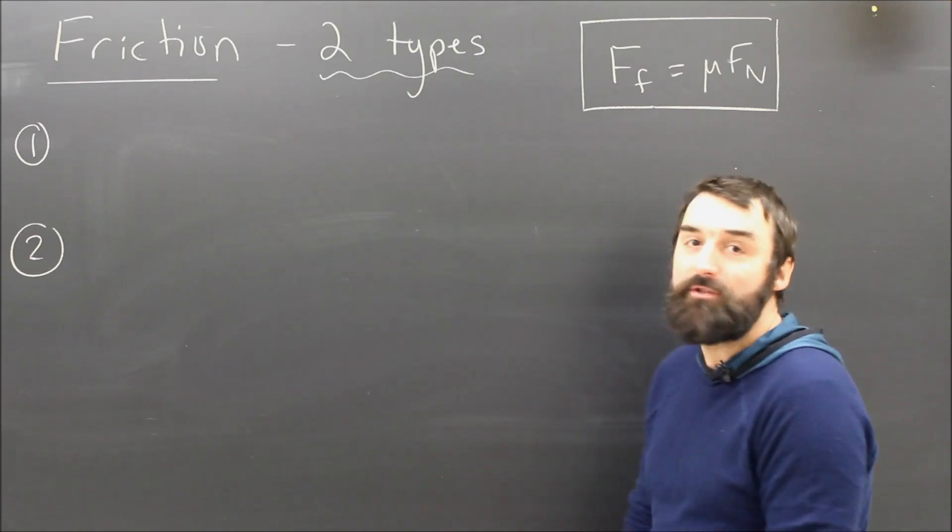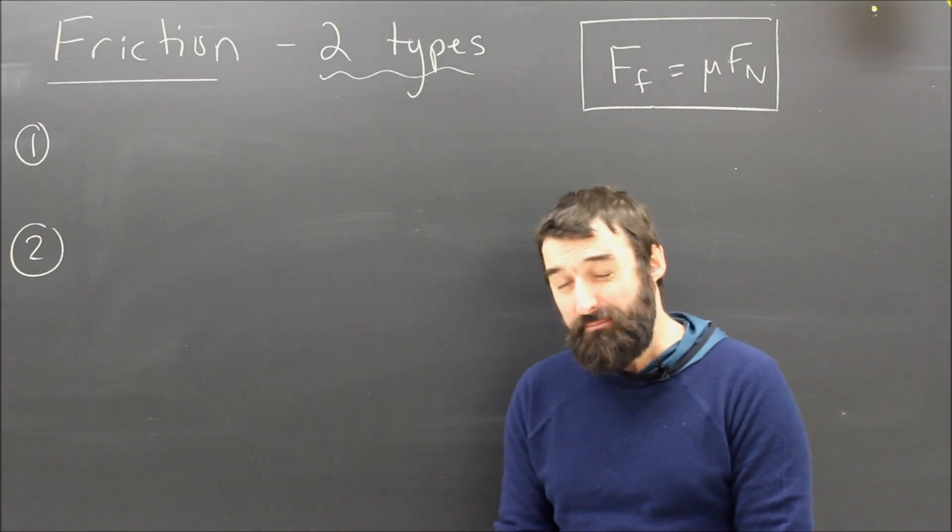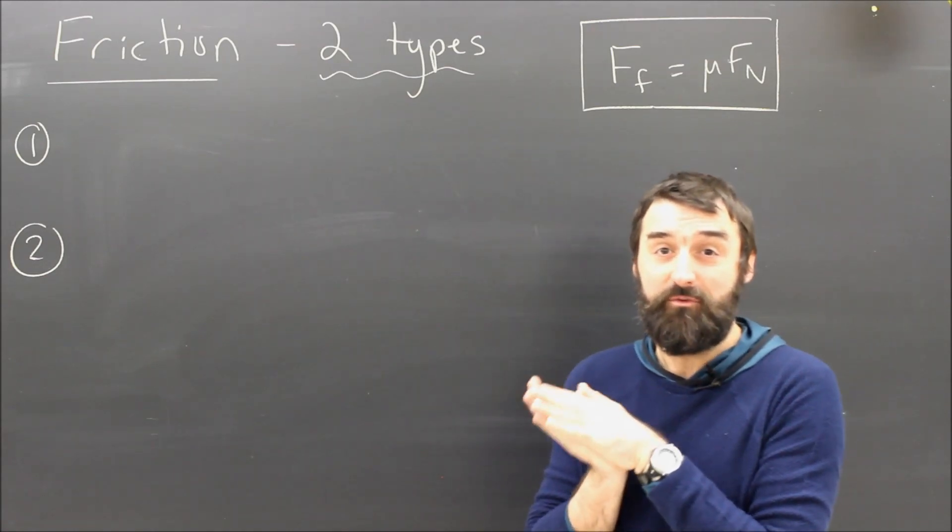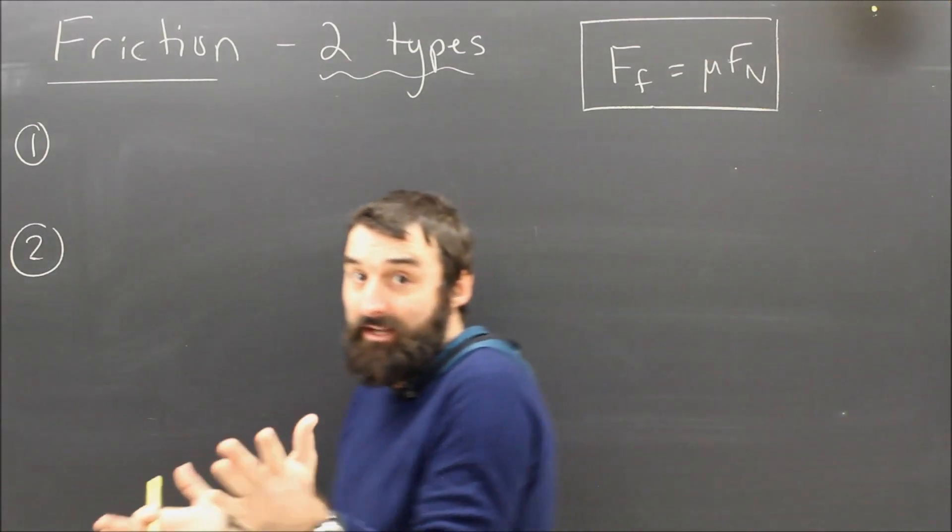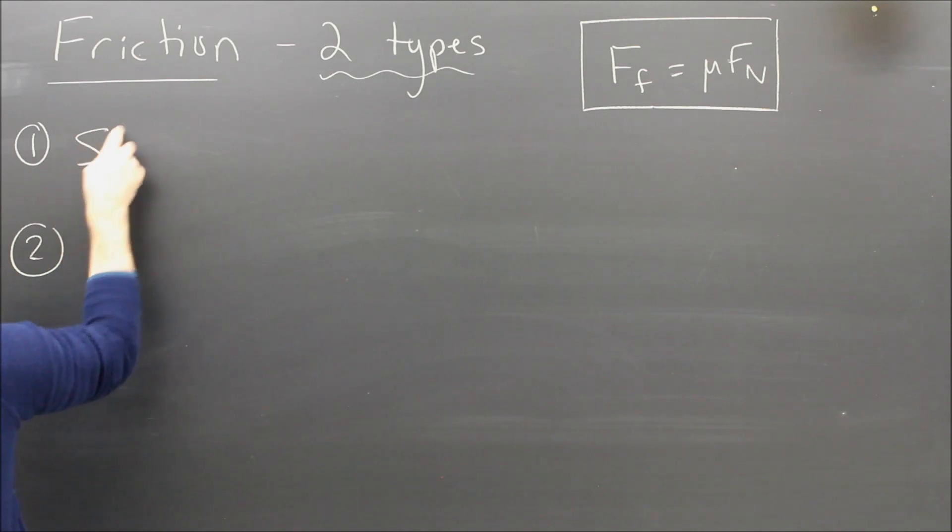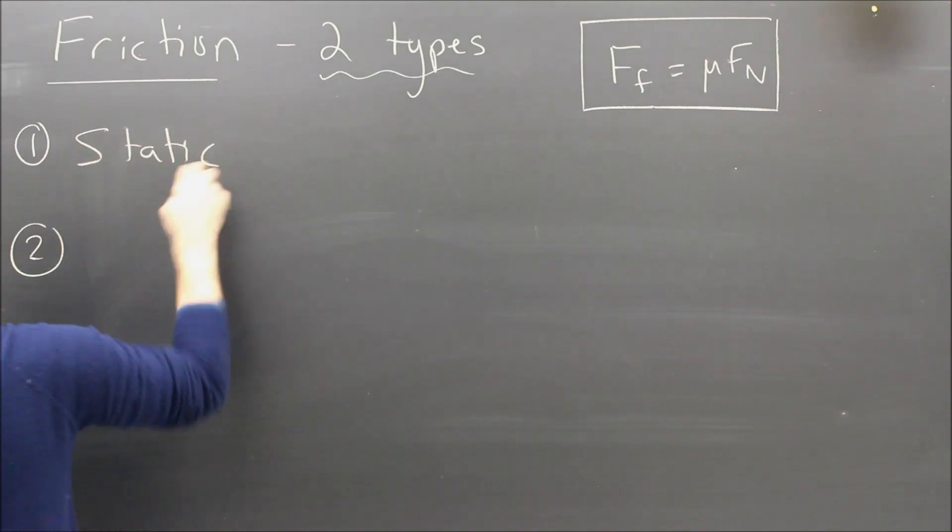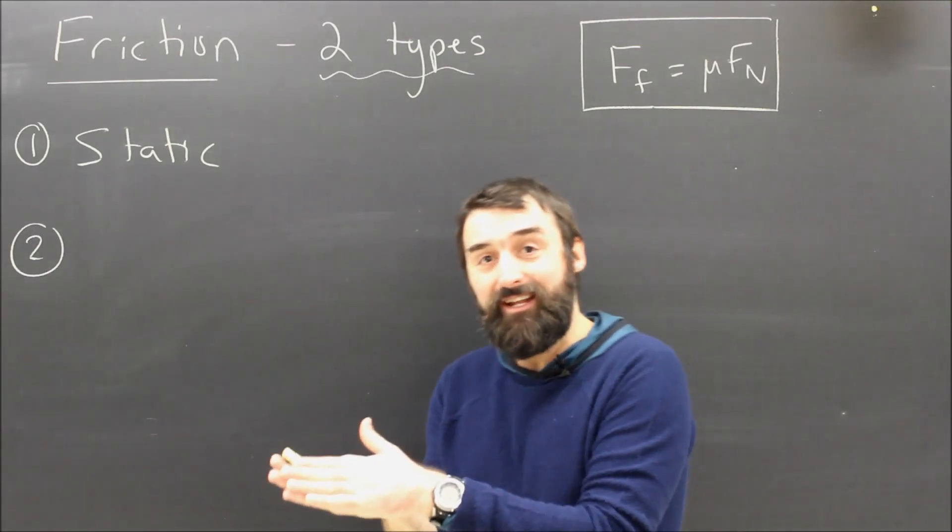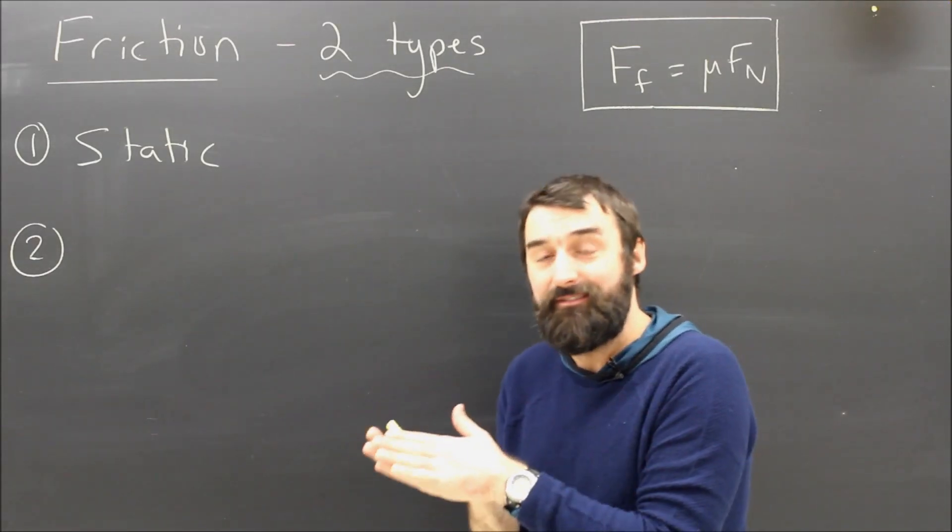But it turns out that there are actually two types of friction. There's one type of friction when the two surfaces are not moving relative to each other, when they are static. And that is called, understandably, static friction. If the two are static, then the friction responsible is called static friction.